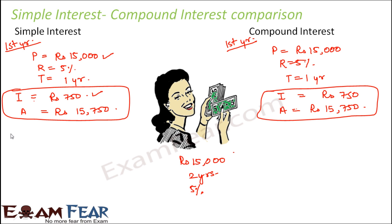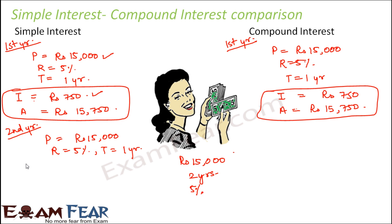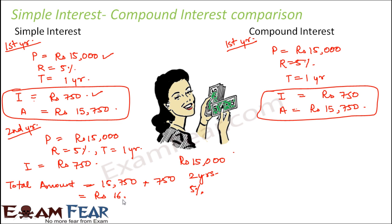The difference comes only when we step into the second year. In the second year, in the case of simple interest, the principal is still rupees 15,000, the rate of interest is still five percent, and the time period is again one year. So the interest is again rupees 750. At the end of the first year she had 15,750, and with another 750 added, the total amount she gets back at the end of two years is rupees 16,500.